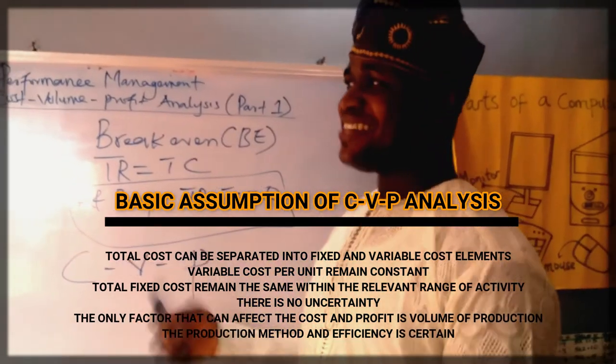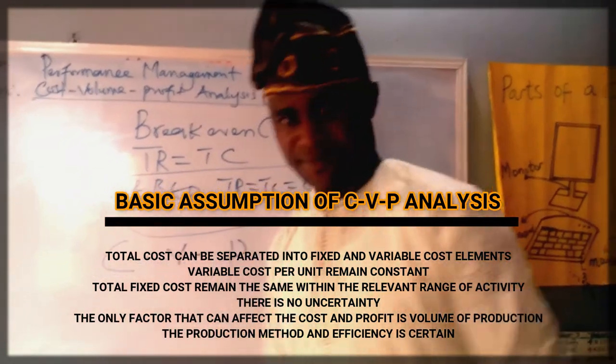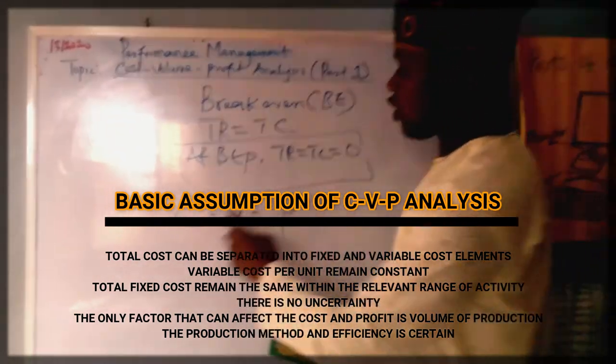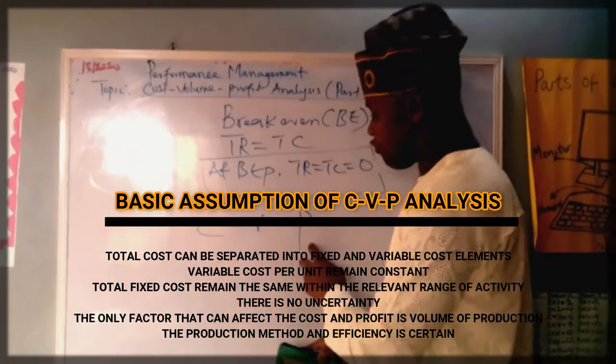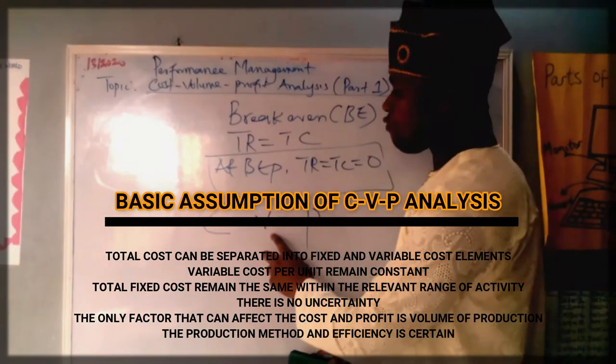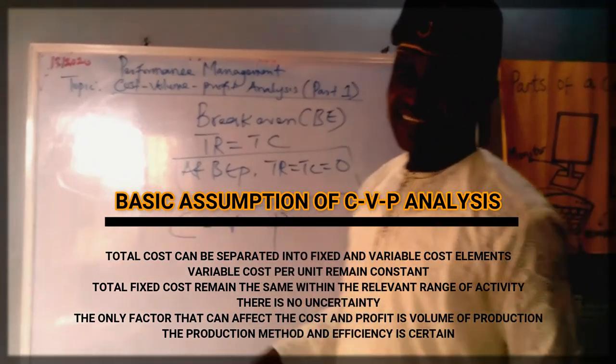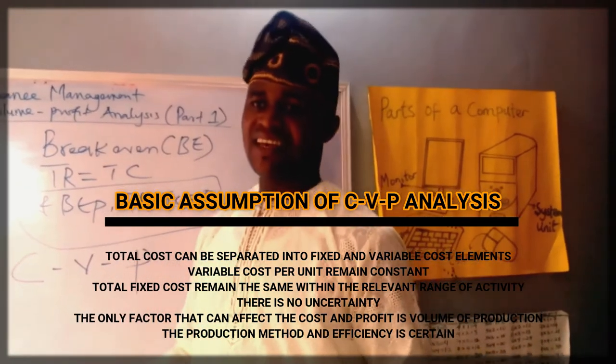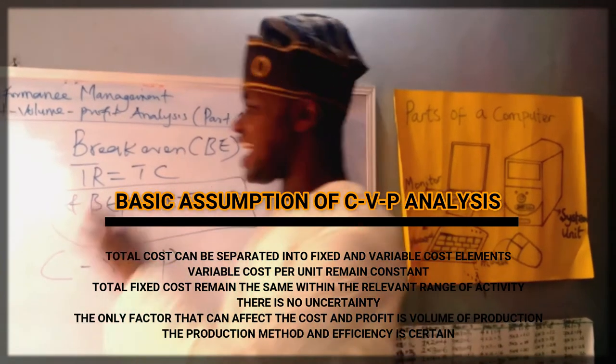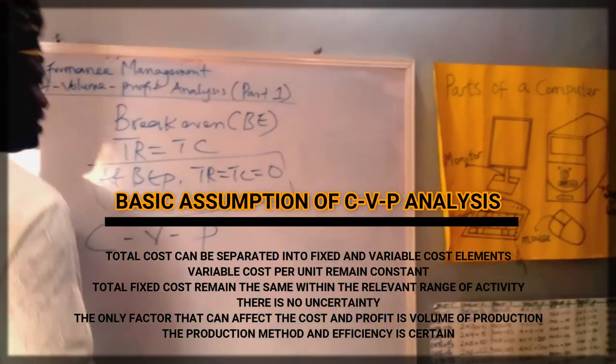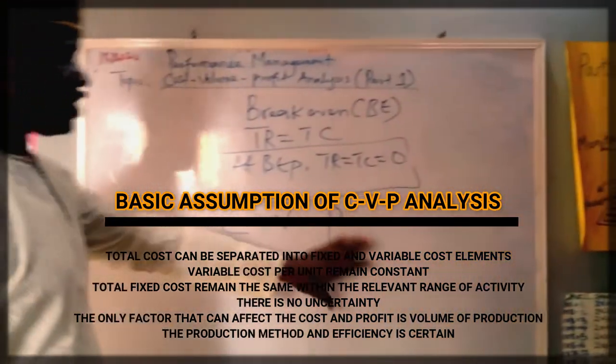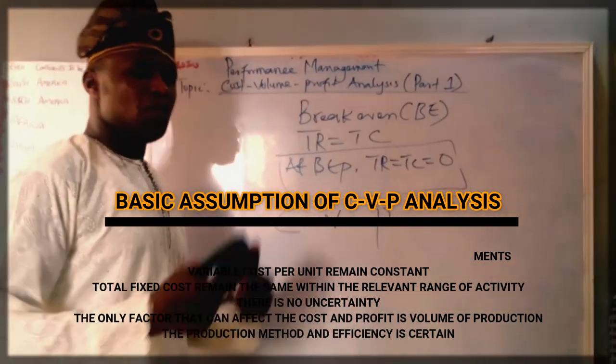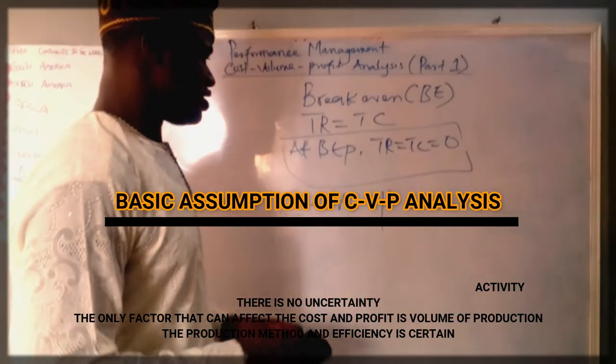Number four, there is no uncertainty. Number five, the only factor that affects cost and profit is the volume of production. Number six, the technique, the method and efficiency is okay. So, these are some of the assumptions that we must put into consideration any time we want to apply cost-volume profit analysis.